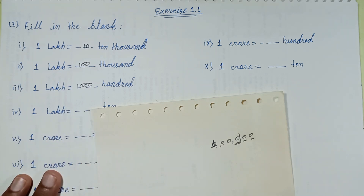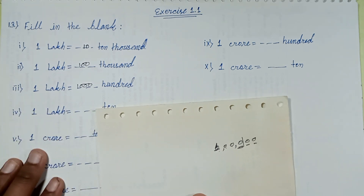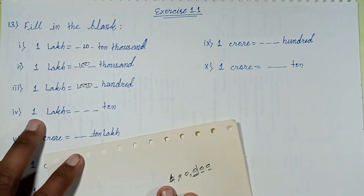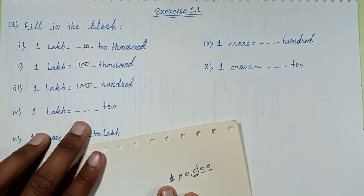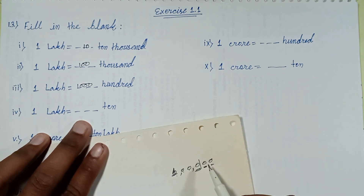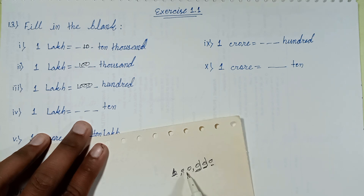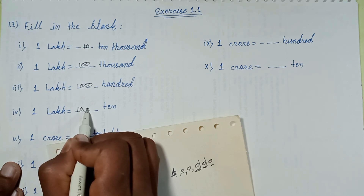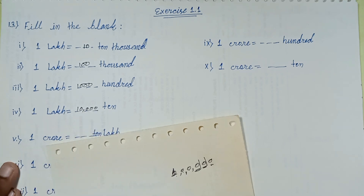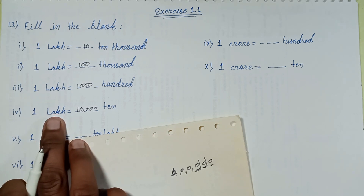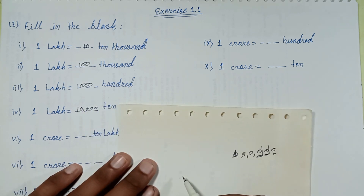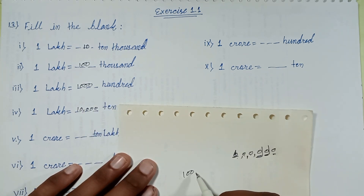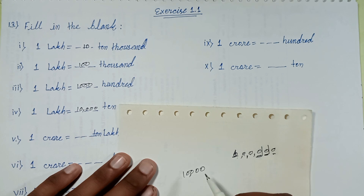One lakh equals how many tens? Counting ones, tens, hundreds, thousands, ten thousands — with this digit, 10,000 ones, tens, hundreds, thousands, ten thousands. Ten times ten equals one hundred. One lakh equals ten thousand multiplied with ten equal to one lakh.